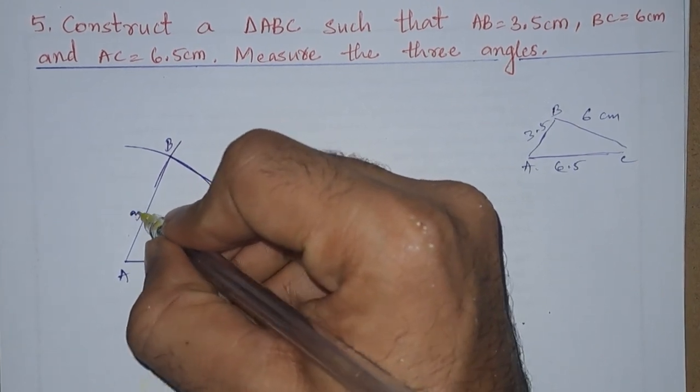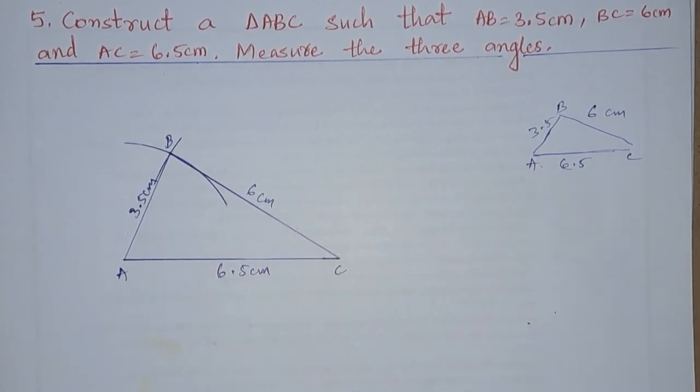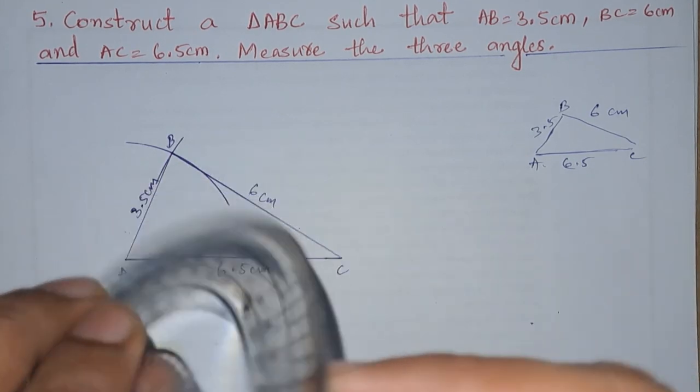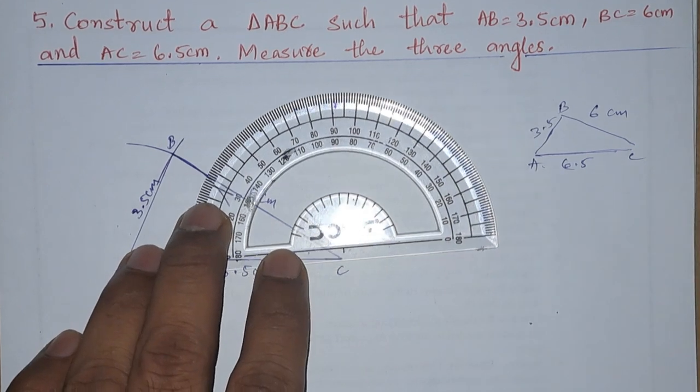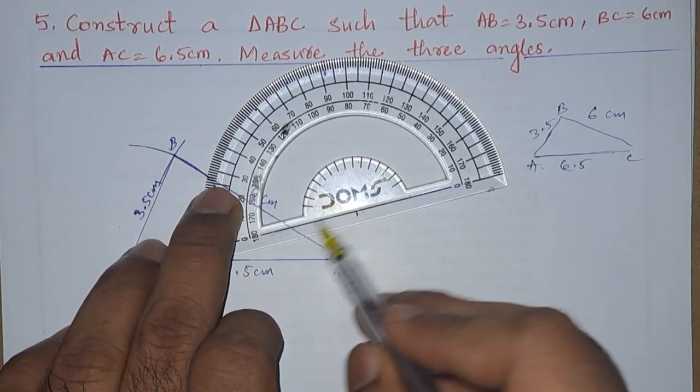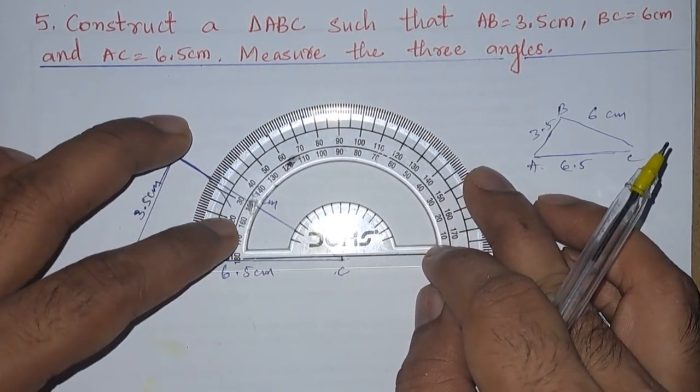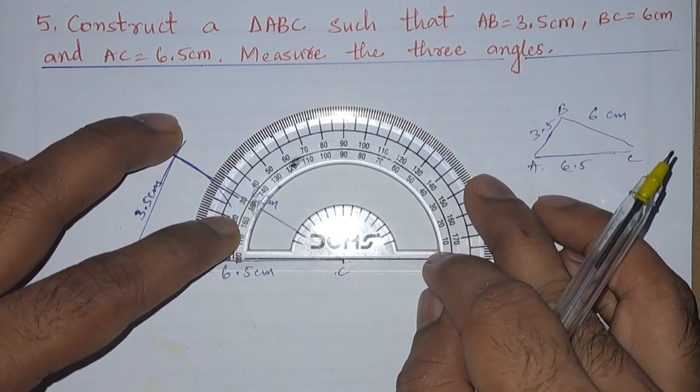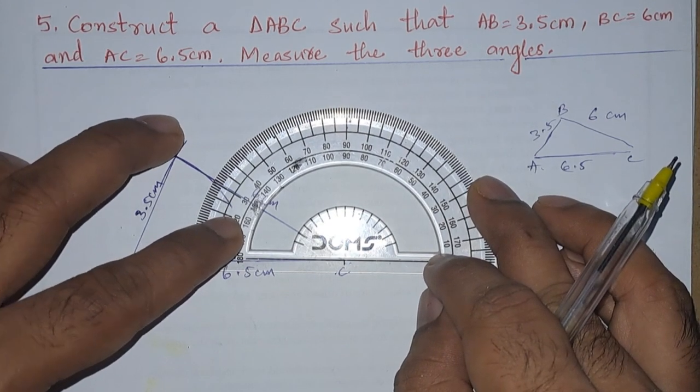After that we need to find out the measure of the angles. So let us find out C first. If we place C, we need to place this point over the point C and this line should overlap, should coincide with AC. So now we placed it over this. Okay, so we got approximately 30 degrees.